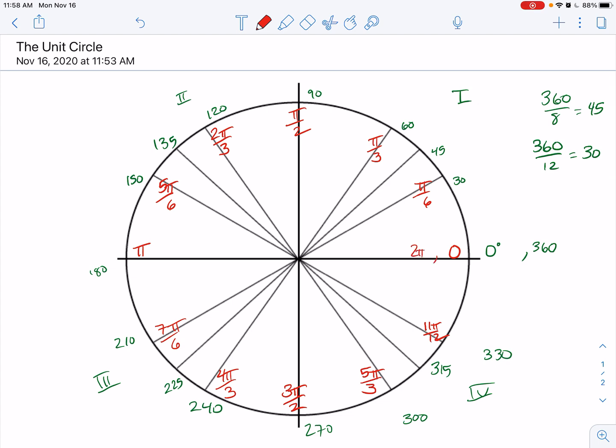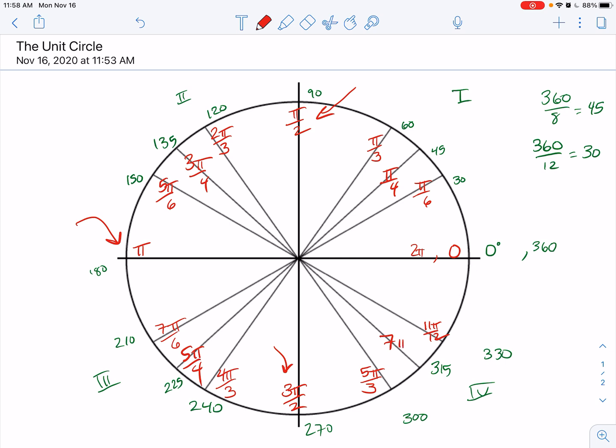And then when I get back, 12 pi over 6 reduces to 2 pi. So you have two different ways to describe that. Then we also have the 45 or the pi over 4 family. So this becomes 1 pi over 4, 2 pi over 4 reduces to pi over 2, 3 pi over 4, 4 pi over 4 reduces to pi, 5 pi over 4, 6 pi over 4 reduces to 3 pi over 2, 7 pi over 4, and then we're back to 8 pi over 4, which reduces to 2 pi.